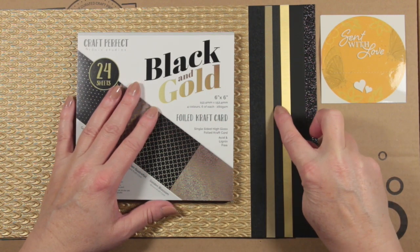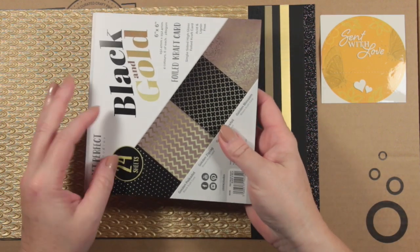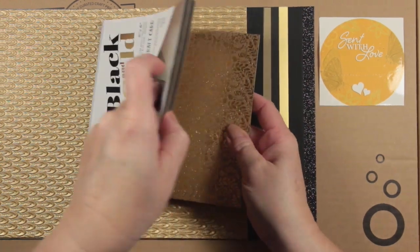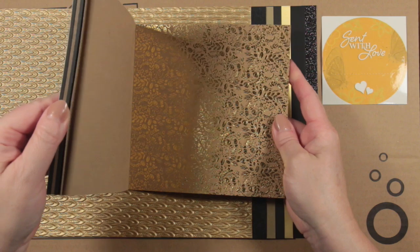Starting with the papers, we have this beautiful selection of textured, glittered, and pearlized papers and cardstock. The 6x6 pad contains a selection of foiled craft cards, and the foiling on these is absolutely beautiful.